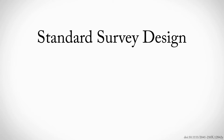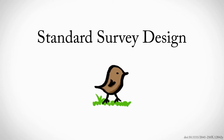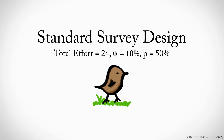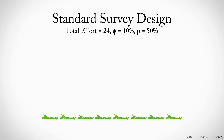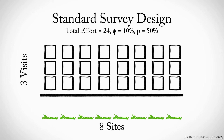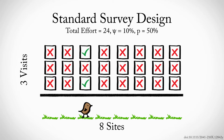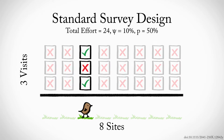Before we explain our new design, we'll start with an example of a standard occupancy survey for the rare Little Brown Bird, which is only found at about 10% of sites, and which we only see about 50% of the time even when it's there. Let's suppose we do 24 total surveys. The standard design has us visiting 8 sites and surveying each one 3 times. On average, only one of these sites will be occupied, and we'll detect that bird on one or two of our three surveys of the site. Most of our effort was spent visiting unoccupied sites with only three total visits to occupied sites.